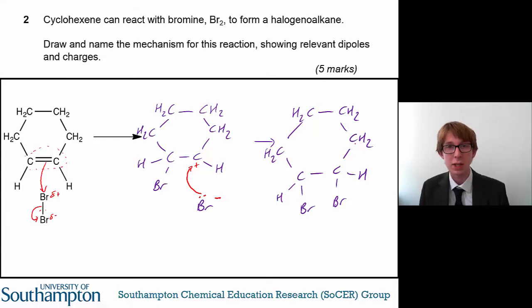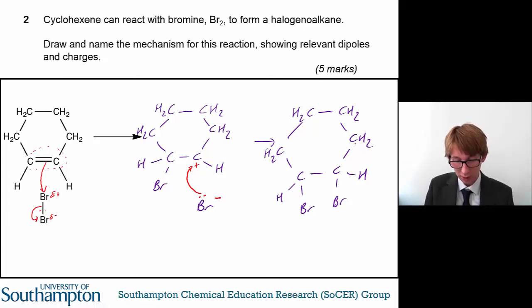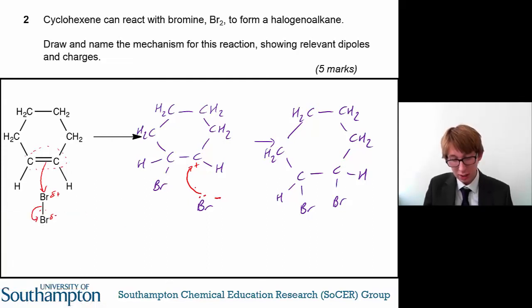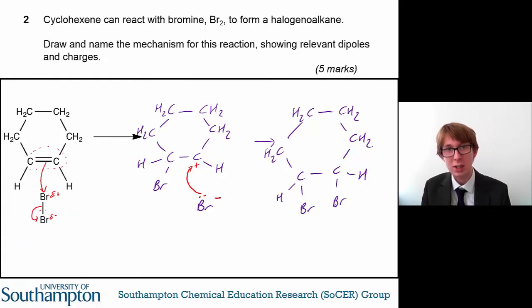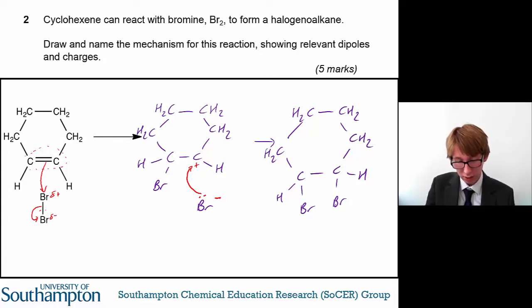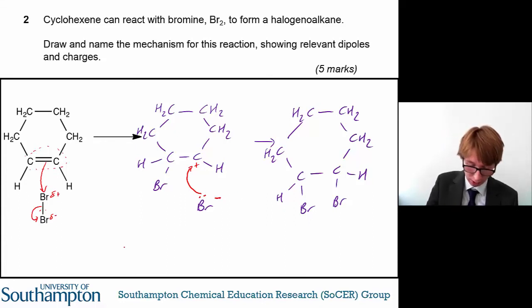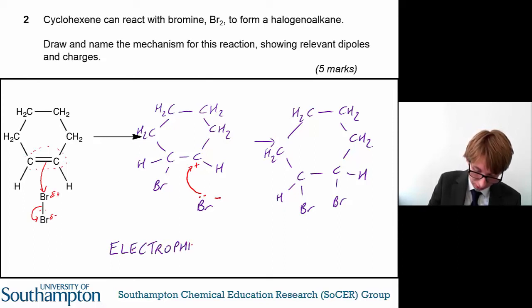It's also asked you to name this mechanism, so you need to think about what's actually occurred. You can see that the bromine molecule is an electrophile because it is accepting an electron pair from the alkene, and this electrophile has been added to the alkene molecule. So this is known as an electrophilic addition reaction.